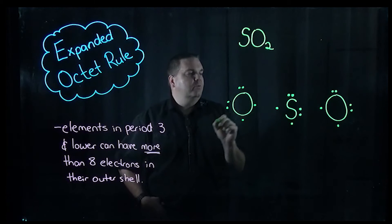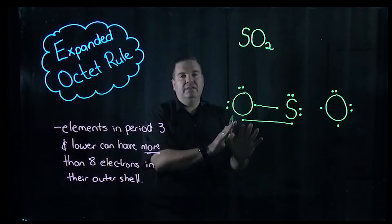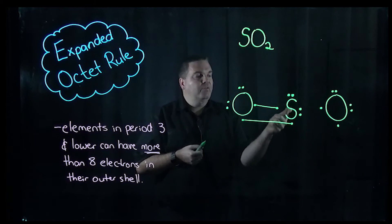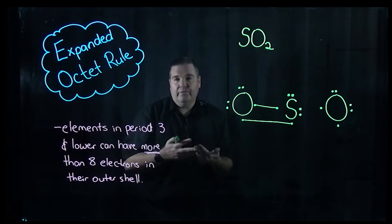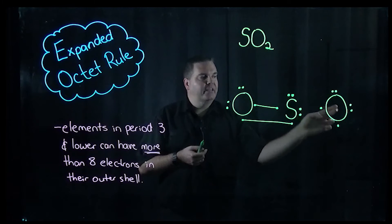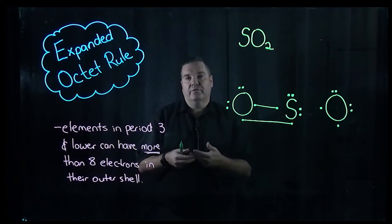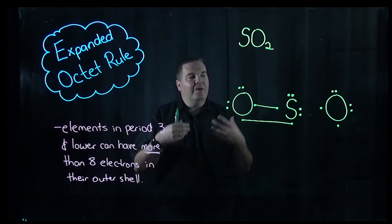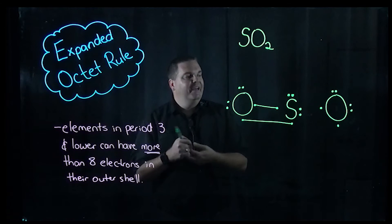What we're aiming for is that oxygen, which is in period two, wants to have eight electrons in its outer shell. So we're going to bond the oxygen to the sulfur. This oxygen now has one, two, three, four, five, six, seven, eight electrons around it. The sulfur also has one, two, three, four, five, six, seven, eight electrons. Normally we think of eight electrons as being stable, but we also want to bring the second oxygen over to form a bond. If the central element were in period two, we'd have to do a coordinate covalent bond — there's a short video on that you might want to check out.